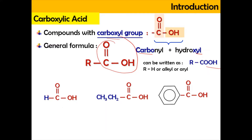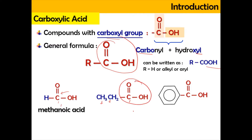For example, if we have H here, the total number of carbons in this structure is 1, and hence it's going to be methanoic acid — carboxyl group and 1 carbon. And then if it has 1, 2, 3 carbons, it's going to be propane, but because it has a carboxyl group, it's going to be propanoic acid. And for this one, it's going to have a benzene ring attached with a carboxyl group, so it's going to be benzoic acid.